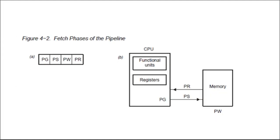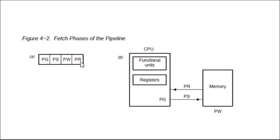Looking at the diagram: in PG the CPU generates the address; in PS the program address is sent to memory; in PW we wait because memory is a slower device and requires time to respond to the CPU's request; and finally in PR the data is fetched into the CPU. These four phases — PG, PS, PW, and PR — constitute the fetch stage only.